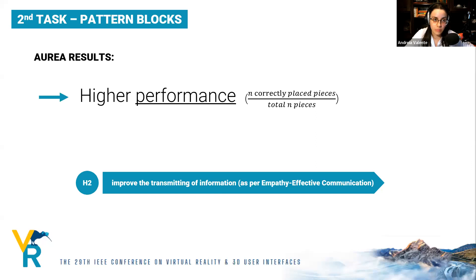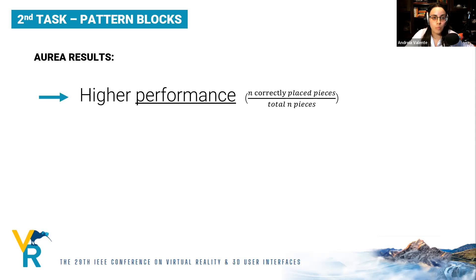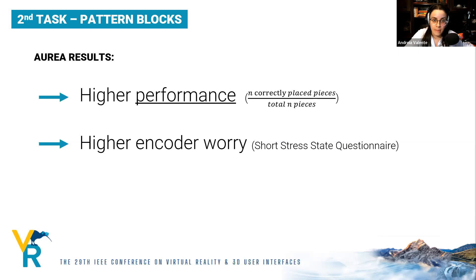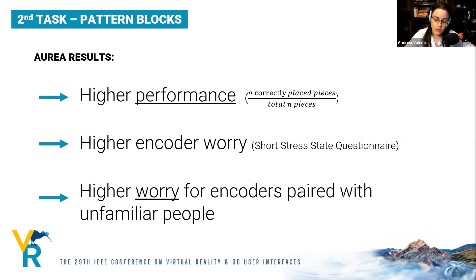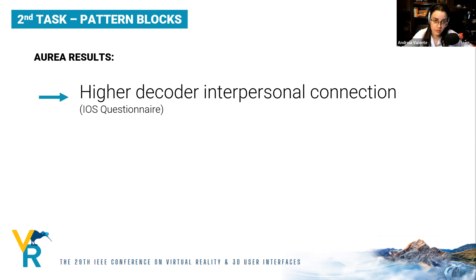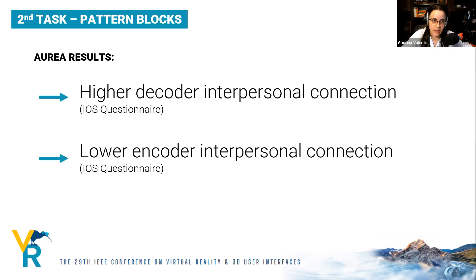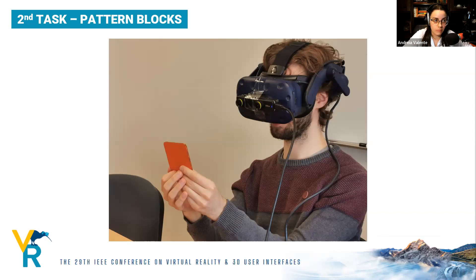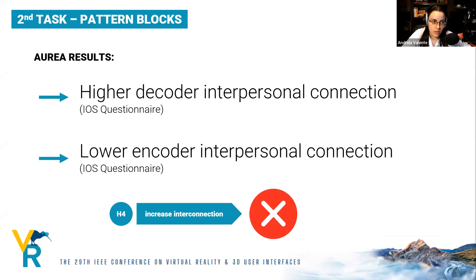Encoders reported a higher level of worry with the system, related to self-consciousness, which was even higher when paired with strangers. In terms of interpersonal connection, decoders reported a higher increase in connection while encoders reported a decrease. This may be related to the fact that equipping one participant with a headset eliminated communication cues important for empathic exchanges, like facial expression and eye gaze. We therefore rejected our fourth hypothesis of increased interconnection.